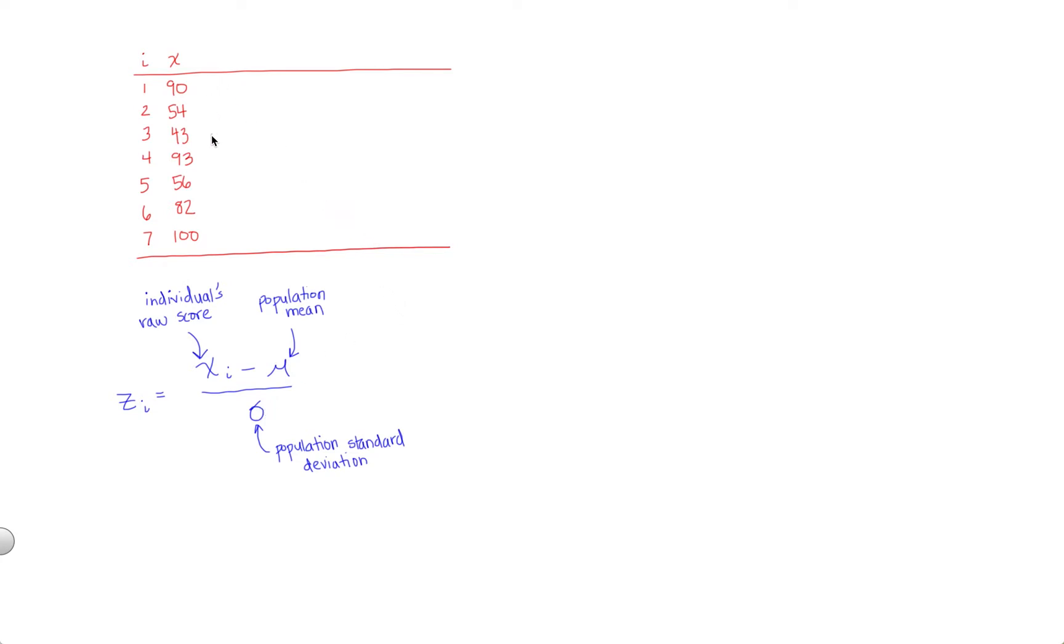Remember that when you're dealing with z-scores, you're not generalizing beyond the data. The data is your population. In this case, these seven participants make up the only people I care about. They're my population of interest.